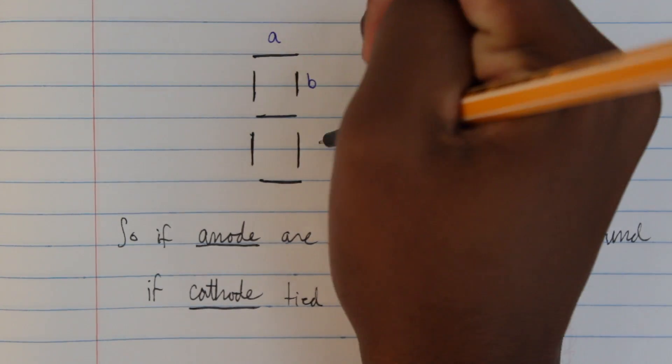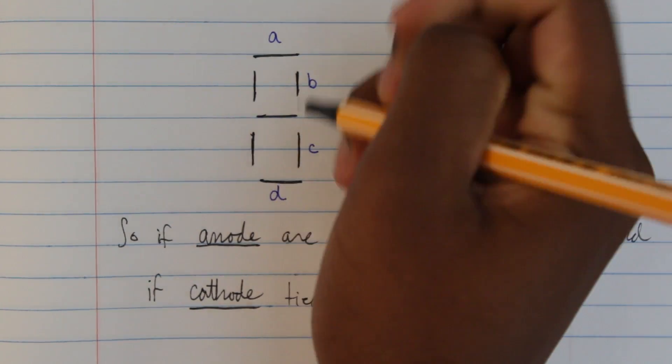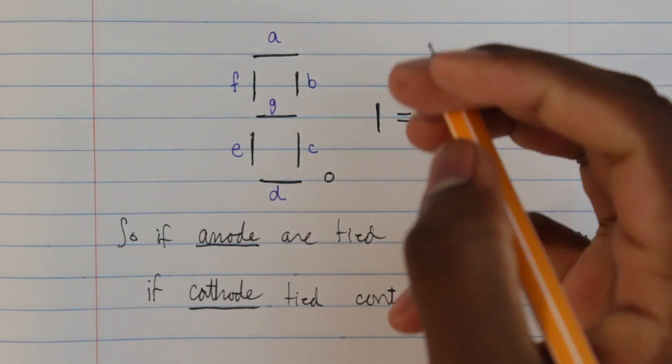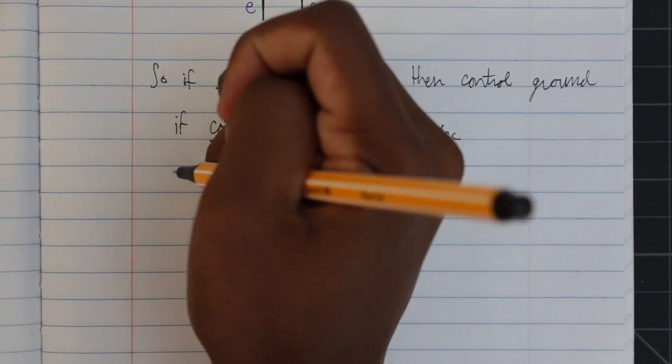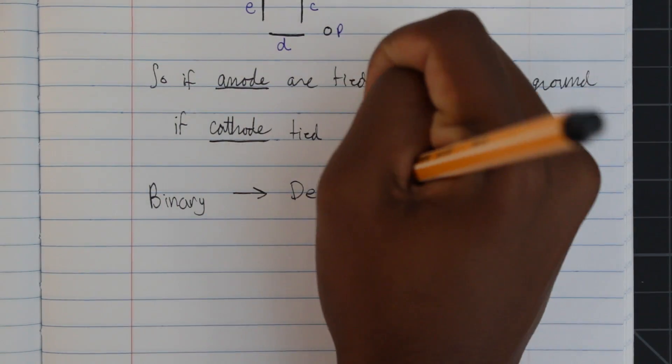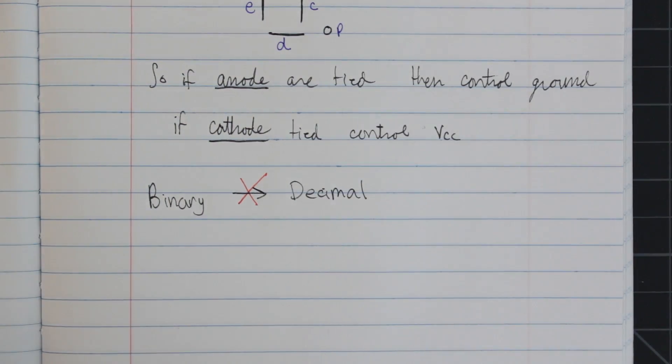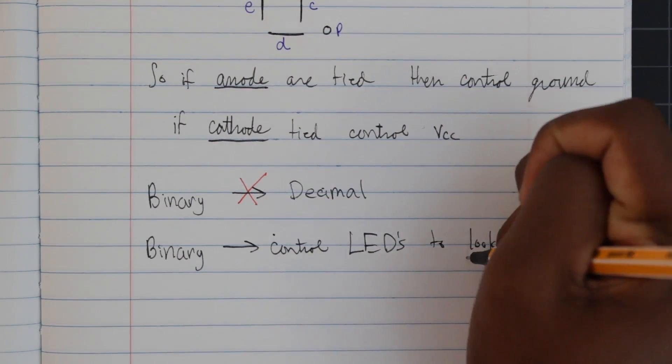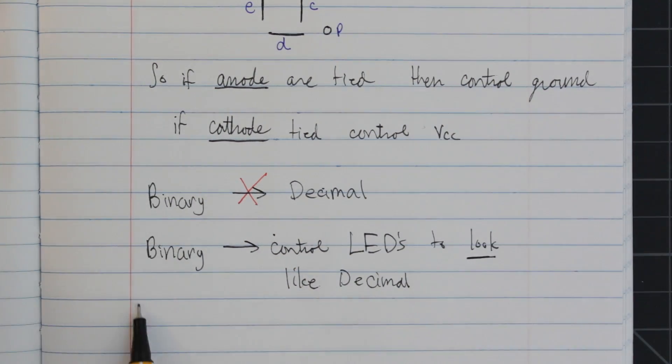The way these seven segment displays are named are as follows: A, B, C, D, E, F, G. Then, sometimes there's a decimal point called P. Now, it's important to know that we aren't converting binary to decimal because they both represent the same number. Rather, we are taking binary and controlling LEDs to look like that value in the decimal number system.